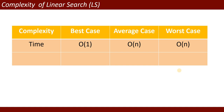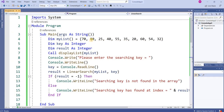Step 4 is the complexity of linear search. The time complexity in the best case is O(1), and in the average case and worst case it is O(n). This is the time complexity of the linear search.